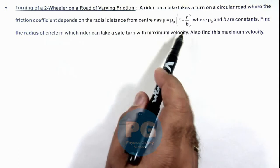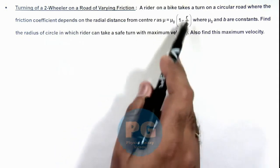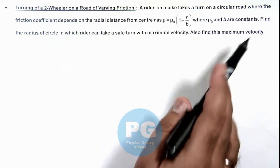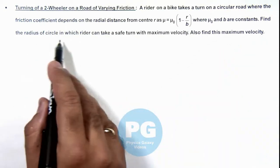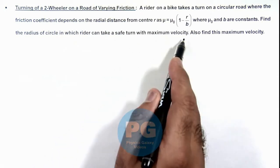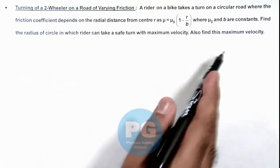center r as μ = μ₀(1 - r/b), where μ₀ and b are constants. We are required to find the radius of the circle in which a rider can take a safe turn with maximum velocity, and also find this maximum velocity.